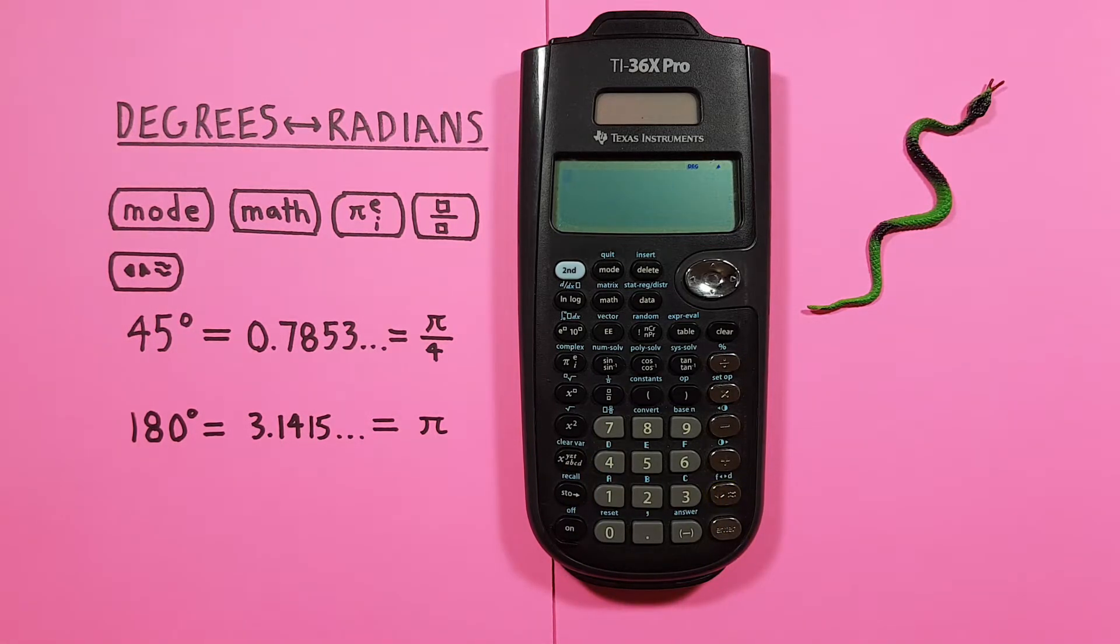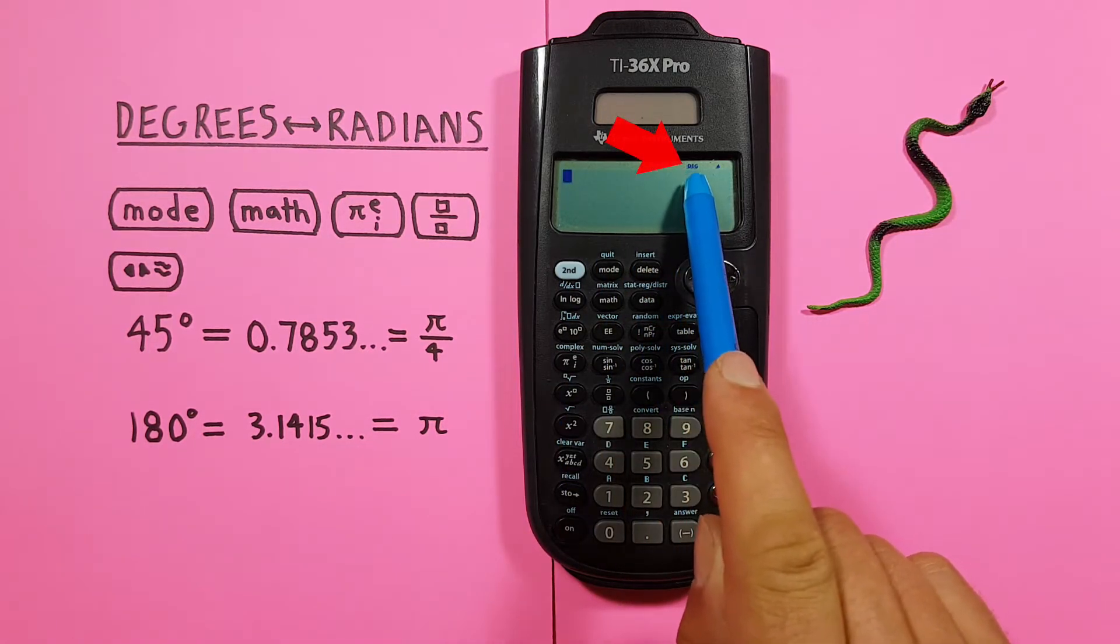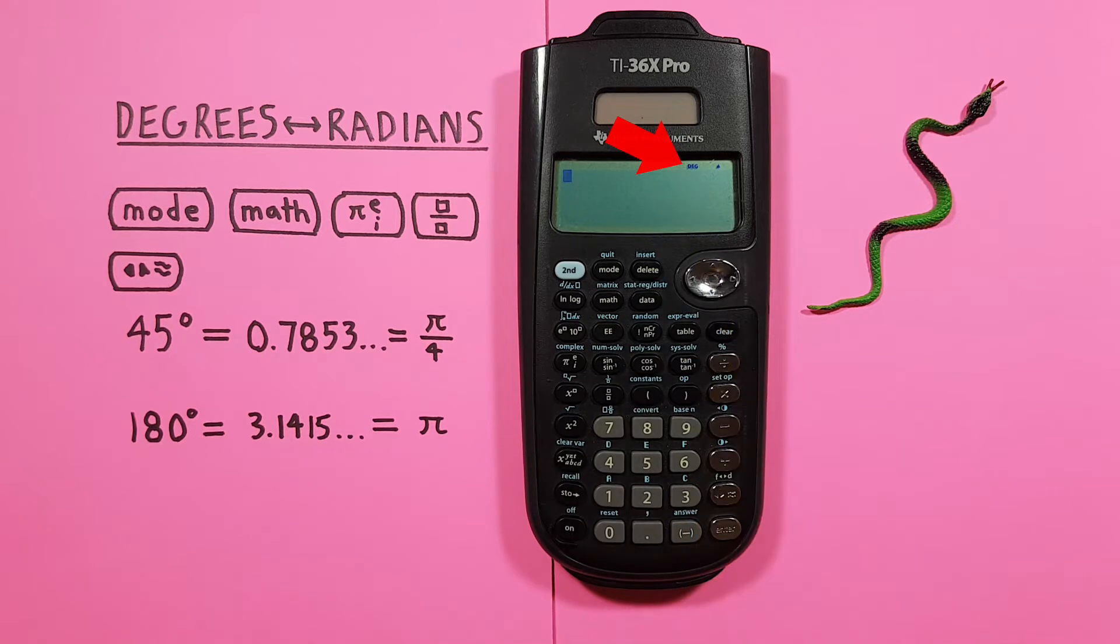Let's say we were given 45 degrees and wanted to convert that to radians. To start what we want to do is set our calculator to the mode we want our results in. Right now you can see DEG at the top of the screen here. This tells us our calculator is in degrees mode.